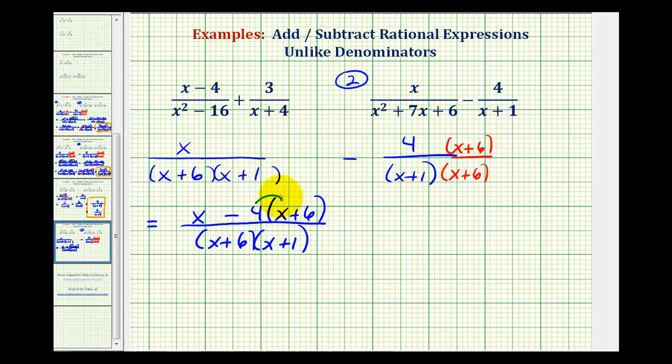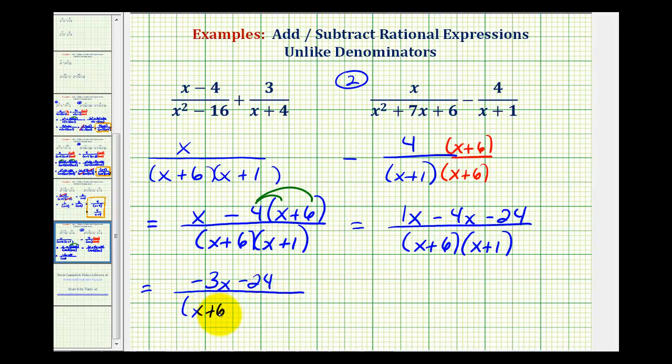So now we're going to clear the parenthesis in the numerator and combine like terms. And because we have subtraction here, we can think of distributing a negative four. So we'd have x minus four x minus 24. Our numerator contains two like terms. One x minus four x would be negative three x. So we have negative three x minus 24 all over a factor of x plus six and a factor of x plus one.